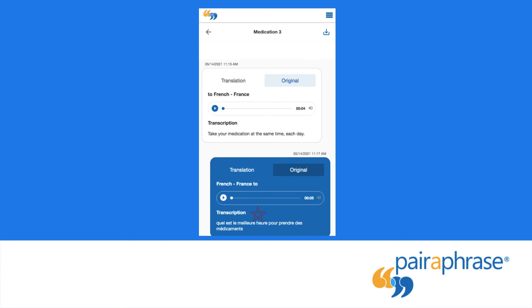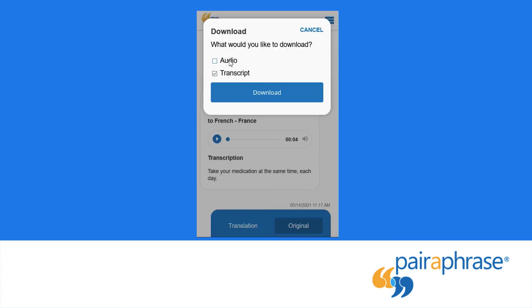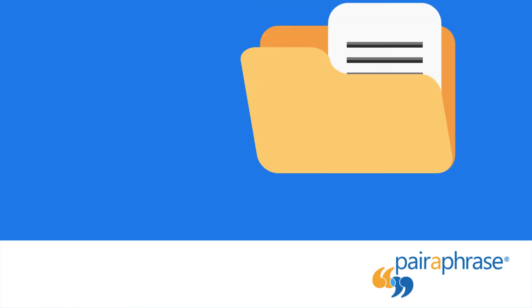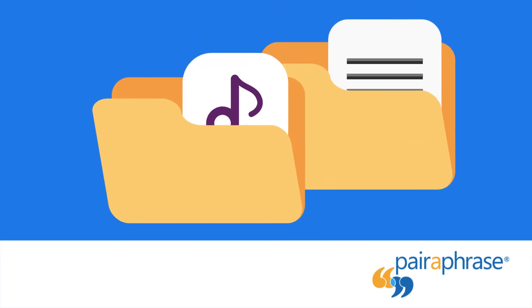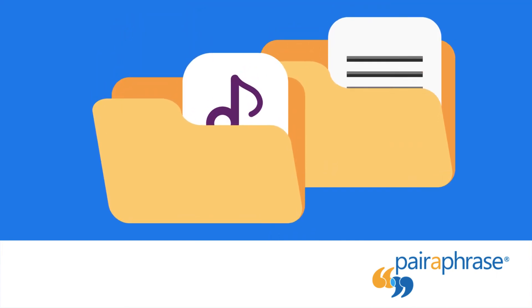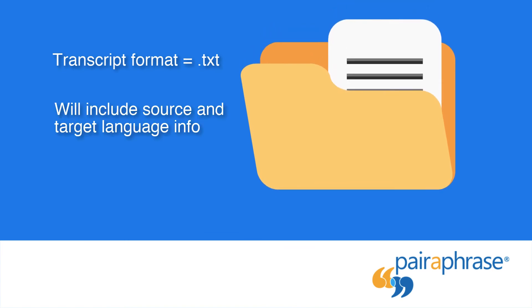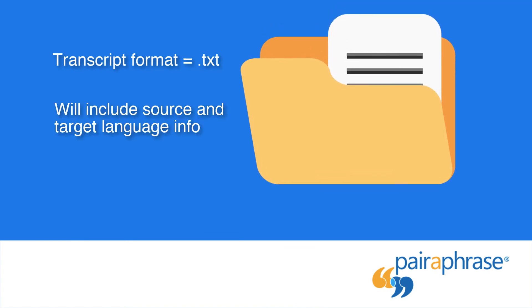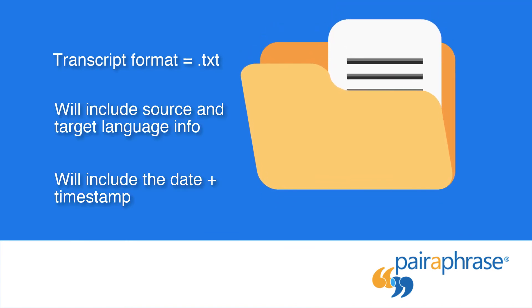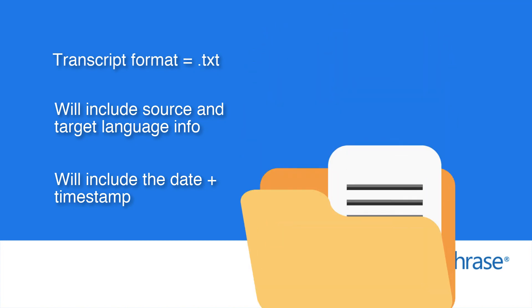If you want to download the audio or get a transcript of the conversation, click the download icon. It will give you a choice, then click the download button. Your transcript and/or audio will be downloaded to your device. The transcript will be in text file format and will include information about the source language and target language for each translation, as well as the date and time stamp.